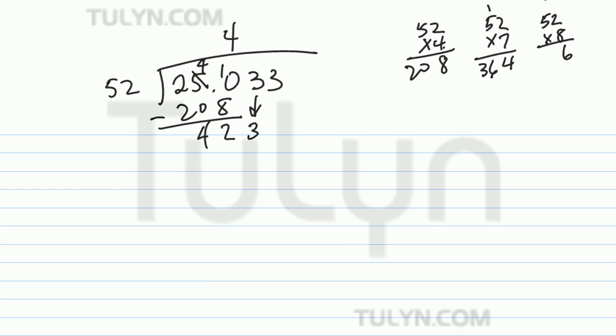2 times 8 is 16, carry 1. 5 times 8 is 40, 40 plus 1 is 416. That's better. Put the 8 on top.